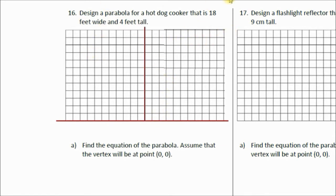We know, class, that to make this job easy, we're going to make our vertex at 0, 0. Oh, it says assume the vertex will be at 0, 0. So, let's write that. The vertex is at 0, 0.